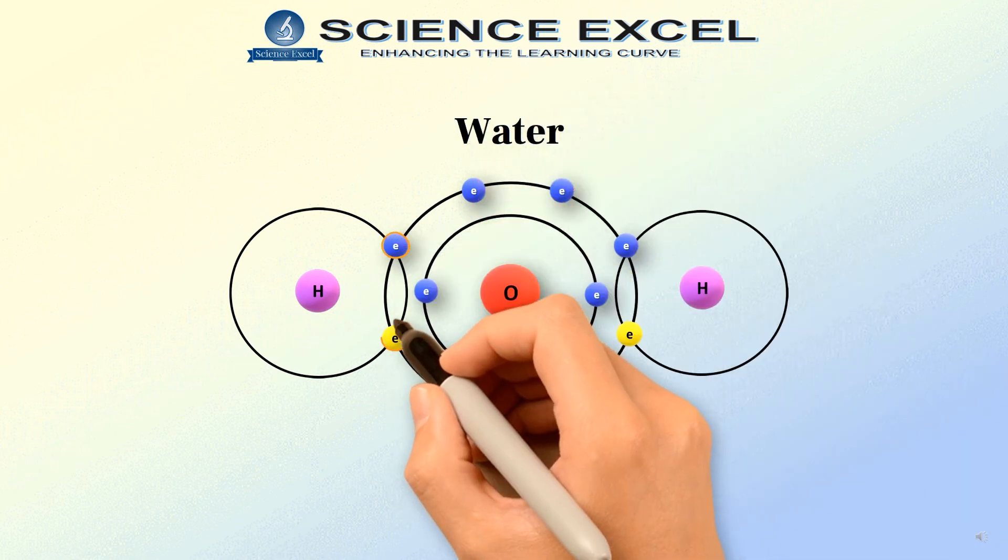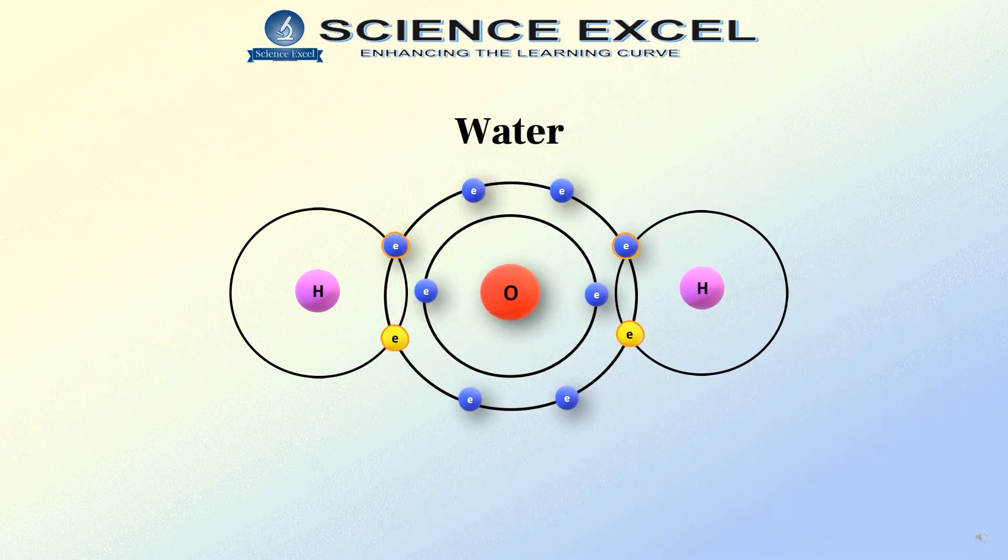The electrons are shared between the 2 elements to fill the outer shell of each, making both the elements more stable. This is how atoms with different valencies combine with each other to form compounds.